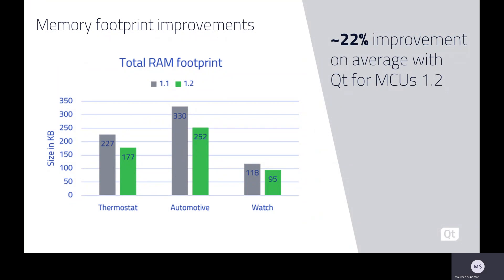In addition to those new product features, we're very pleased that the memory footprint has improved significantly between versions. Here's a graph that compares version 1.1 with 1.2 as an example. We've tested different application types, and the results show an average decrease in memory footprint of 22% overall. We will continue to bring forth additional improvements as we evaluate our latest release 1.3 and beyond.